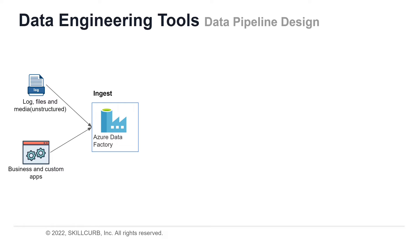Let's take a look at the data pipeline and how it works and what you can expect to happen on every stage of the data pipeline. The first step is ingestion. Here you get log files, media files, generally unstructured files, and a lot of information from business and custom applications. All of this goes into Azure Data Factory and is ingested and brought into Azure.